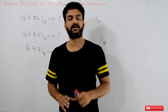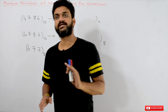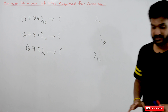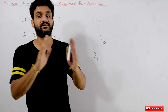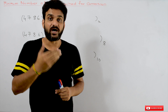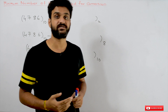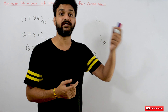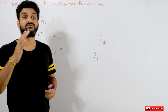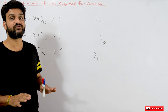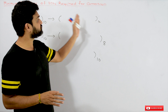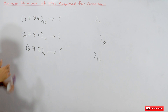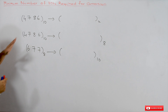Welcome to Learning Monkey. I am Vikram. In this class we will try to understand the minimum number of bits required for conversion. What this means is: if a number is given in a particular number system and you are asked to convert that number into another number system, what are the minimum number of bits required to represent it in that number system?